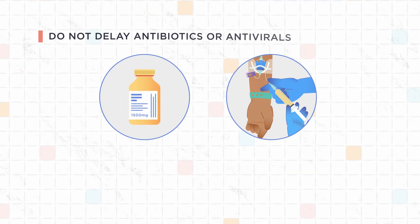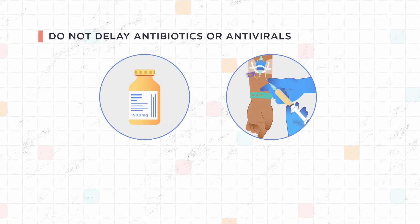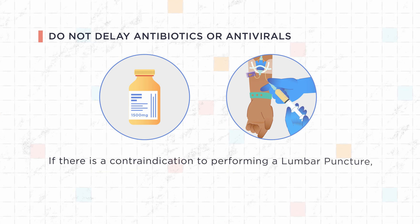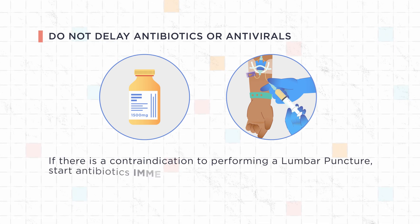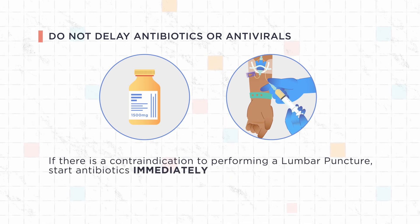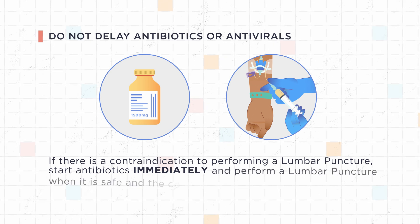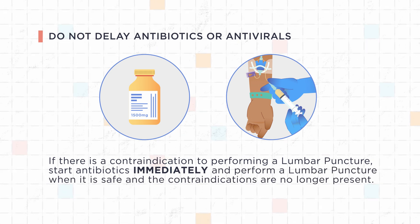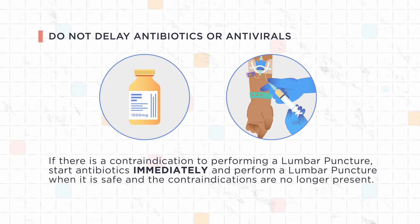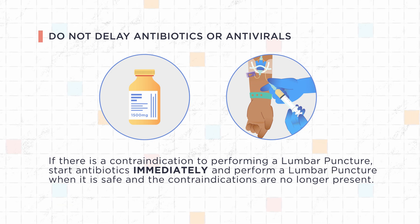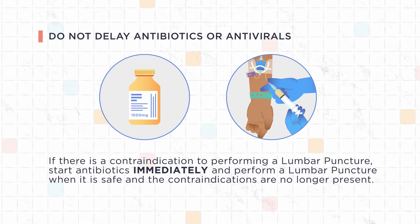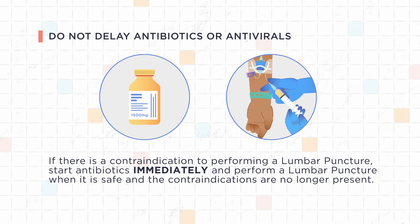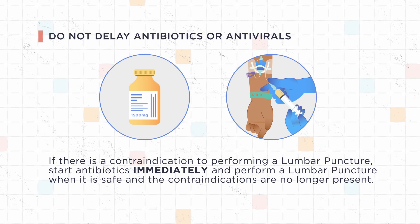Do not delay antibiotics or antivirals. If there is a contraindication to performing a lumbar puncture, start antibiotics immediately and perform a lumbar puncture when it is safe and the contraindications are no longer present. If a patient is suspected of having a CNS infection and there is a contraindication, start antibiotics and/or antivirals immediately.